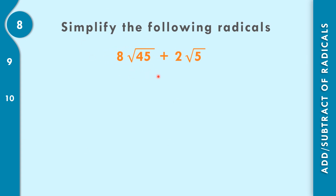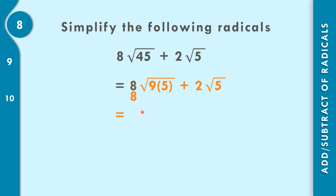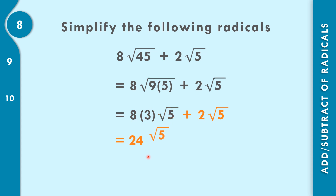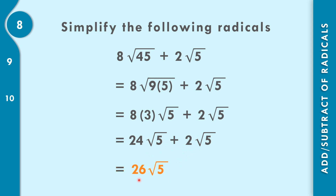In number 8, 8 square root of 45 plus 2 square root of 5. We find the factor of 45 with a perfect square that includes 5: that is 9 times 5. So 8 square root of 9 times 5 plus 2 square root of 5. Square root of 9 is exactly 3, giving 8 times 3 square root of 5 plus 2 square root of 5, which is 24 square root of 5 plus 2 square root of 5. 24 plus 2 equals 26. Final answer: 26 square root of 5.